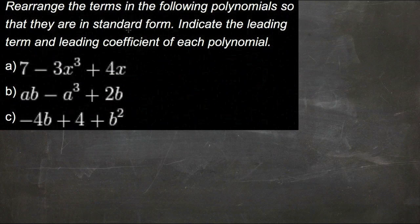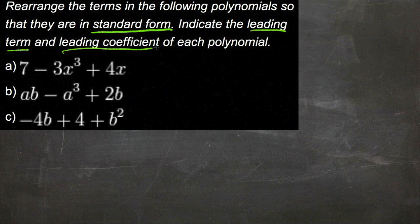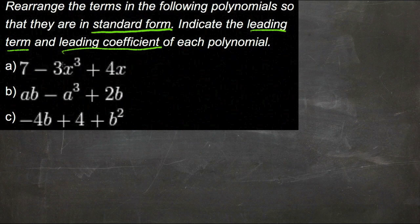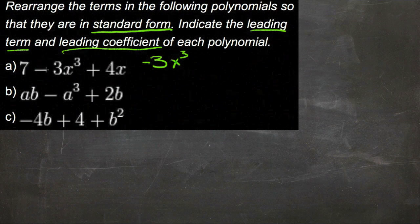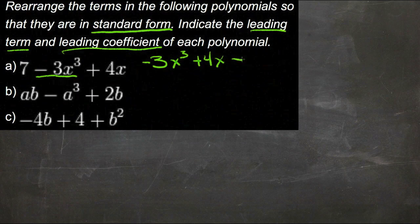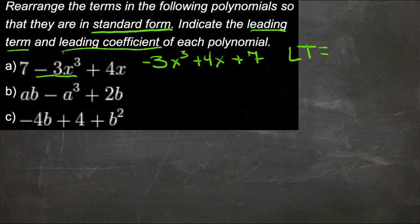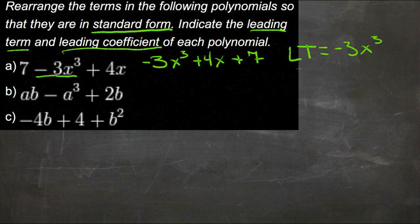In this example, we need to rearrange the terms in the polynomial so that they're in standard form, and then indicate the leading term and leading coefficient of each polynomial. Standard form means we're going to rearrange them into descending powers — usually of x. Sometimes, as in the case of b and c here, you don't have an x, so you just use the highest power term and go into descending powers of it. So in our first one, we have negative 3x cubed as the highest power of x, and then positive 4x and positive 7. Now that's in standard form. The leading term is negative 3x cubed, and the leading coefficient is negative 3.